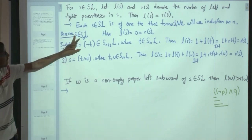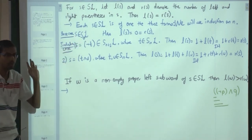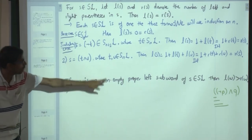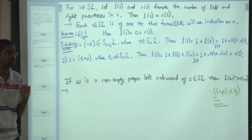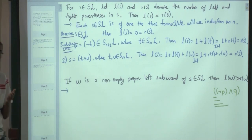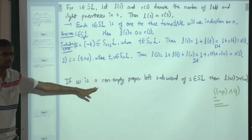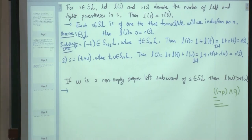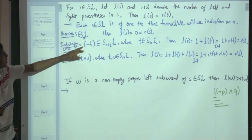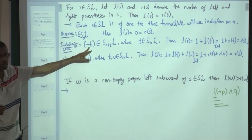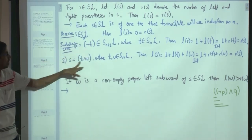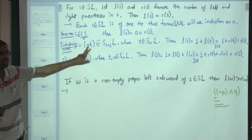The base case is S belongs to S_0 L. Then can there exist a non-empty proper left subword? It has length 1, so either the subword is empty or it is everything — there is nothing to prove. For the inductive case, you can either have S equals negation T or S equals T conjunction U. Let us consider the case S equals negation T.